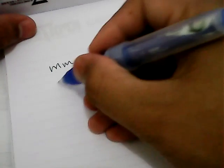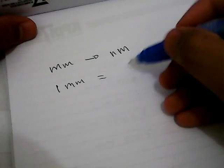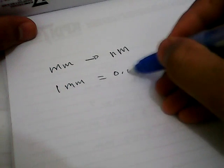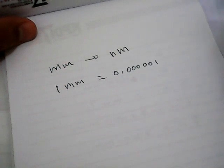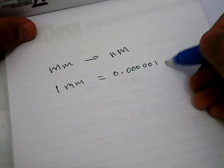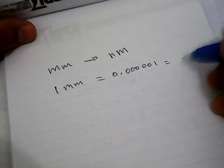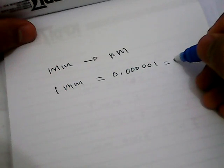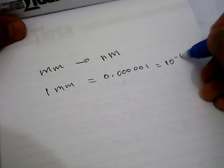We need to know that one millimeter is equal to 0.000001, or another way you can write it like this: it's equal to this number, which is actually equal to 10 power minus 6 nanometers.